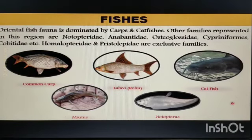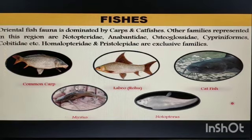Regarding fauna, the Oriental fish fauna is dominated by carps and catfishes. Other families represented in this region include Notopteridae, Anabantidae, Osteoglossidae, Cypriniformes, Cobitidae, etc. These are exclusive families of this region.